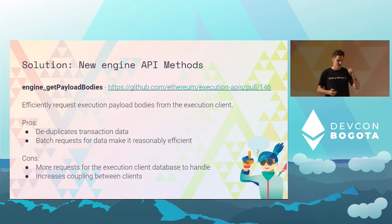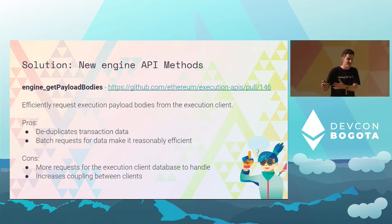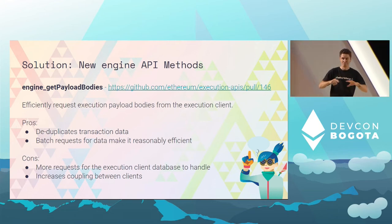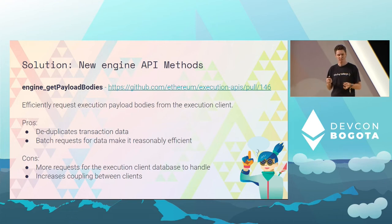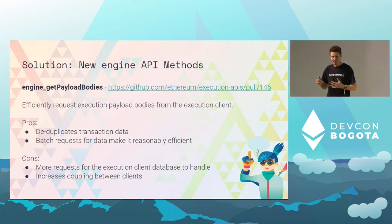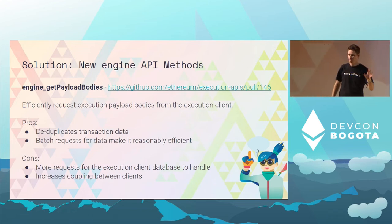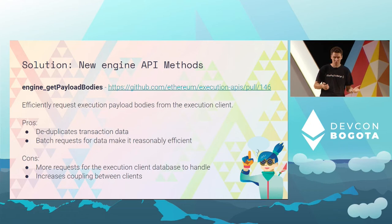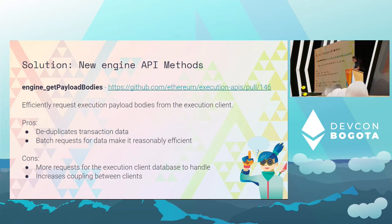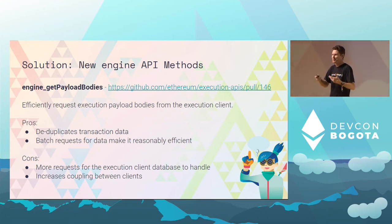Lighthouse has a feature where they emulate this get payload bodies through the existing JSON RPC. Cool tech, well done. But it turns out it puts a lot of pressure on the execution clients. Sometimes it works well if you've got enough I/O; sometimes it hasn't, and they've added an option to turn it off and just go back to duplicating the data. The other issue is that we get an increased coupling between the two clients — if your execution client is resyncing, your consensus client just lost a bunch of block data it thought it had. There's a lot of complexity around how to deal with that.